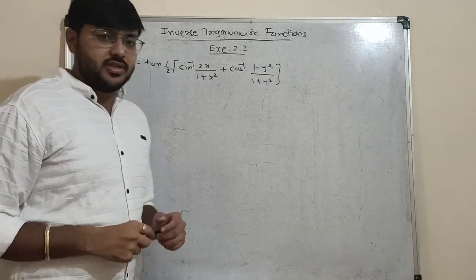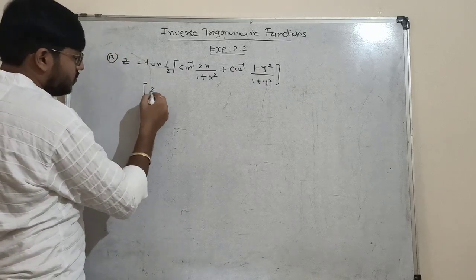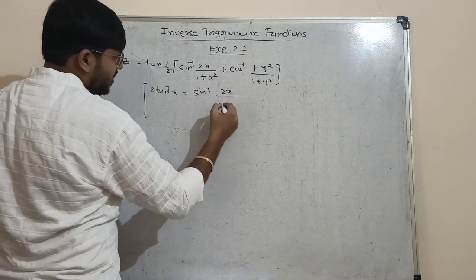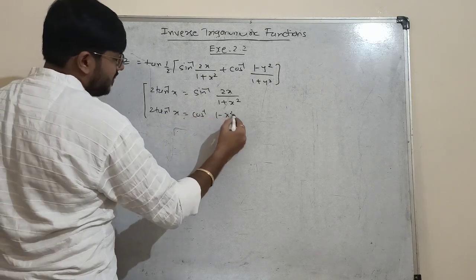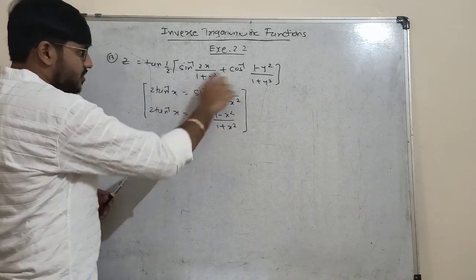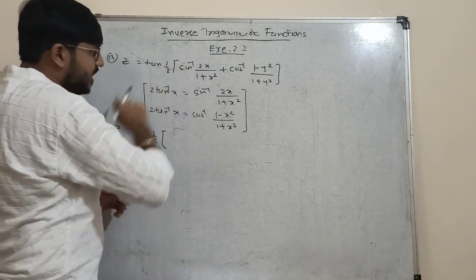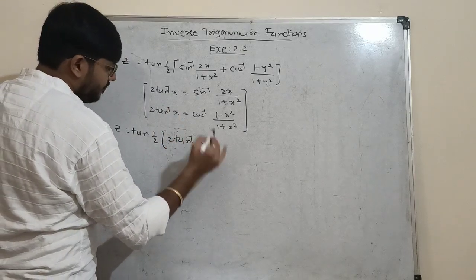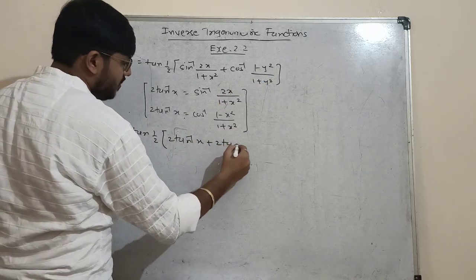I give you two options: either go with substitution, or if you remember the two theories we discussed — that 2·tan⁻¹x can be written as sin⁻¹(2x/(1+x²)) and also as cos⁻¹((1-x²)/(1+x²)) — then directly use these two equations. Instead of sin⁻¹(2x/(1+x²)) write 2·tan⁻¹x, and instead of cos⁻¹((1-y²)/(1+y²)) write 2·tan⁻¹y.